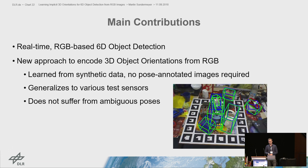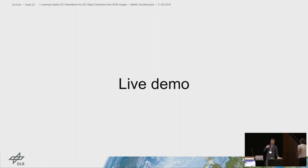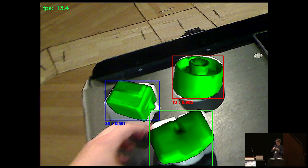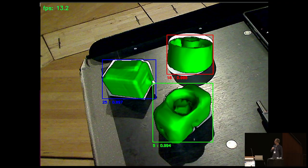We will now have a short live demo running on a Jetson TX2. You can see that this approach is really efficient. There is no tracking involved, that's why it flickers a bit, but it basically works quite well even in real life, not only on datasets.